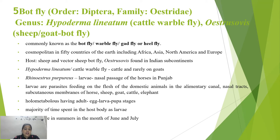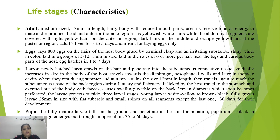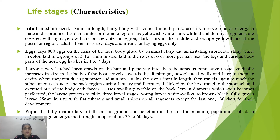Hypoderma lineatum, the cattle warble fly, is found on cattle and rarely on goats. They are holometabolous with all four stages, and the majority of time is spent in the larval stage within the host body. Adults are medium sized, 13 mm in length, with a hairy body and reduced mouthparts, living only three to five days solely for egg laying. The head and anterior thoracic regions have yellowish-white hairs, middle abdominal segments have dark hairs, and posterior region has orange-yellow hairs. Females lay about 800 eggs on host hairs, glued with an irritating substance, in groups of 5 to 12, in rows of six per hair near the legs.